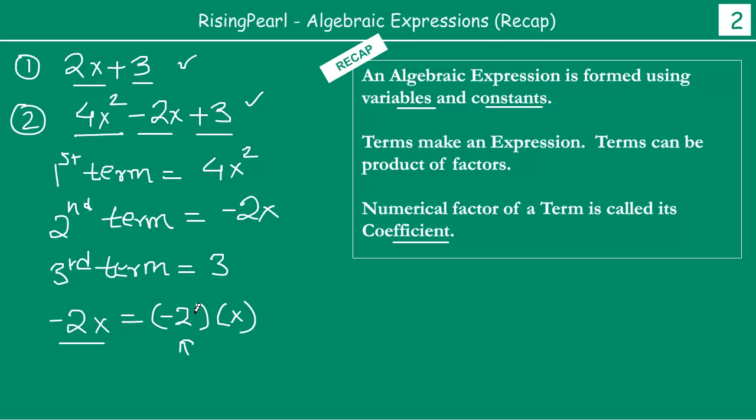Similarly, if you take the first term in the second example, the first term is 4x squared, so we can write this as 4 multiply by x squared. In this case, this number 4 is actually the numerical factor of the first term. So if someone asks what is the coefficient of the first term in this example, it is 4, or what is the coefficient of x squared - that is number 4.